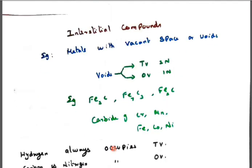So interstitial compounds are metals with the vacant spaces or voids. The vacant space are called as a void, maybe the tetrahedral void and octahedral void. Tetrahedral is T, void is called V. Octahedral O and void is called V.